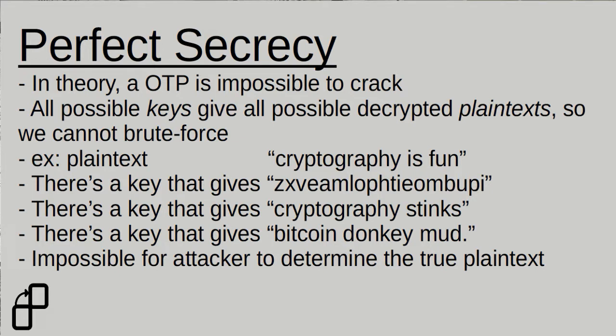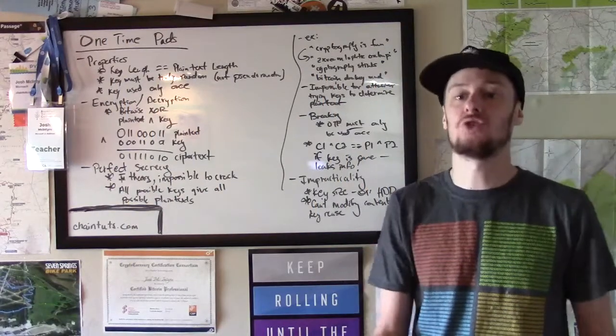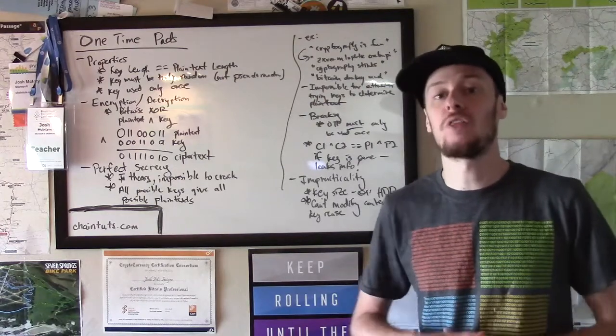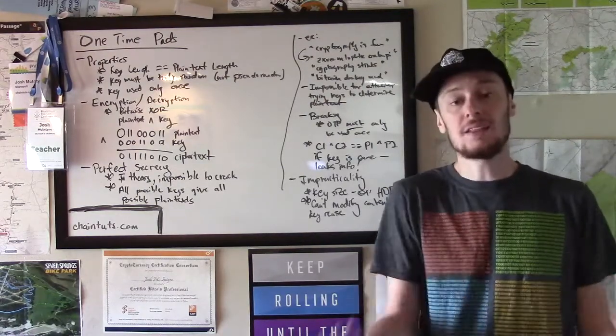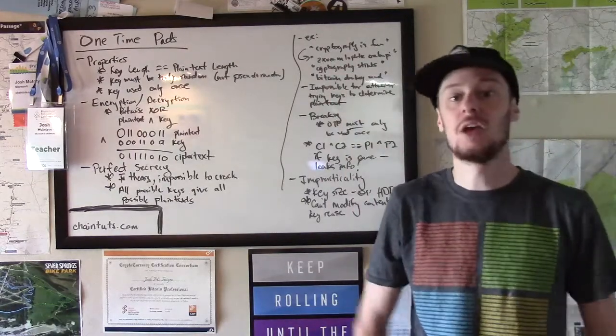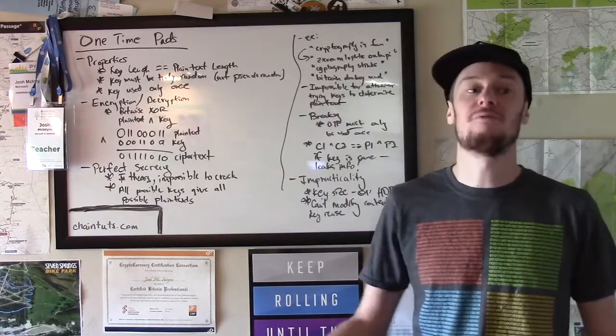The reason for this perfect secrecy of a properly constructed one-time pad is that all possible keys give all possible plaintexts. So what do I mean by this? Let's say you had a ciphertext from somebody. You had an encrypted message that was done using a one-time pad, and you wanted to try and brute force all the possible keys. Now, let's say this message is short, 19 bytes or 19 ASCII characters. This is certainly something where you could try all candidate keys using a modern computer very quickly.